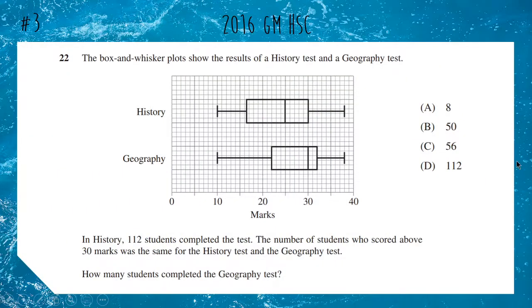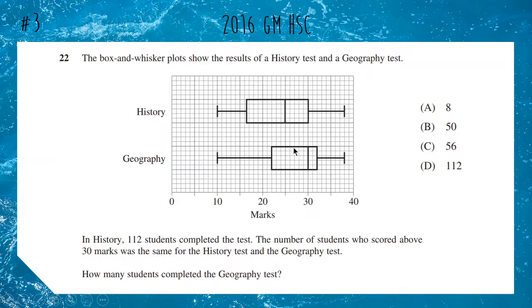Next one, again from 2016 General Maths: we have two box and whisker plots for a history test and a geography test. In history, 112 students sat the test, and the number of students who scored above 30 was the same for both tests. How many students sat geography? A box plot splits data into quartiles, so a quarter of 112 is 28. In history, a quarter scored above 30, whereas in geography the median is at 30, meaning half scored above 30. So half of geography equals 28, making the total 56 — option C.